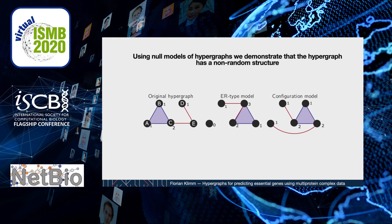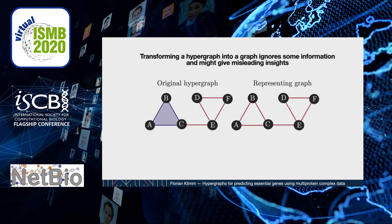We find that many hypergraph properties — for example, the number of connected components or the degree of assortativity — are different in the original hypergraph than in those random null models. We can also transform the hypergraph into a graph by replacing all higher-order interactions with pairwise interactions. In the example here, we have in the hypergraph a hyperedge between nodes A, B, and C, and we can replace them with pairwise edges between nodes A and B, B and C, and A and C.